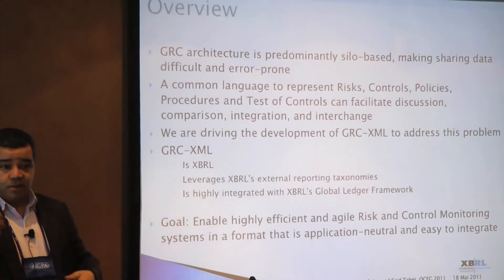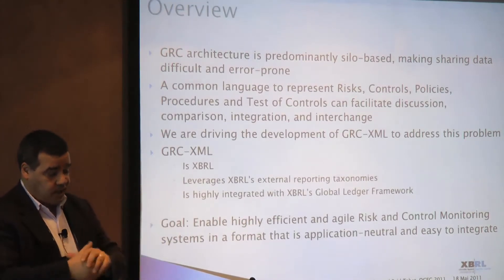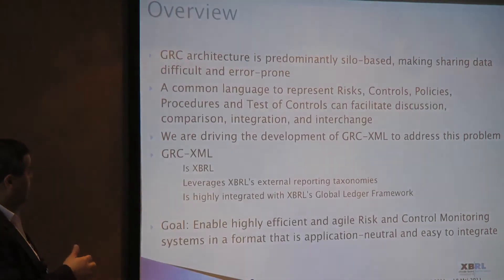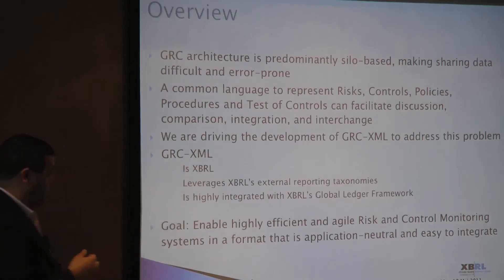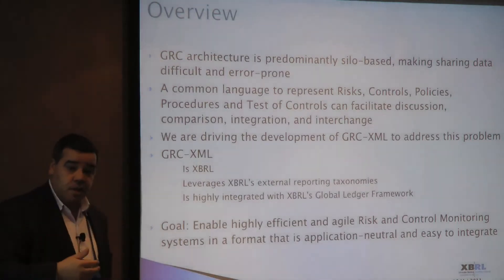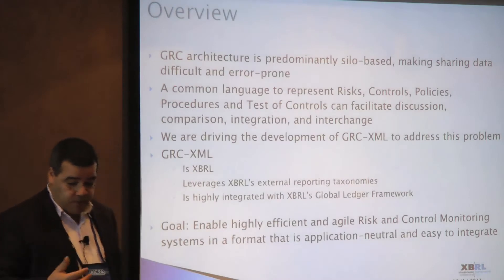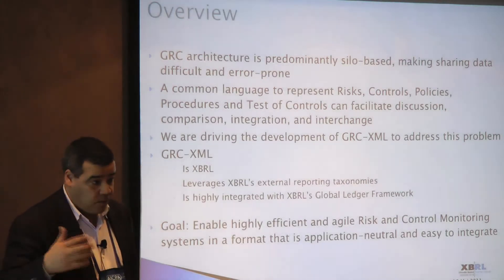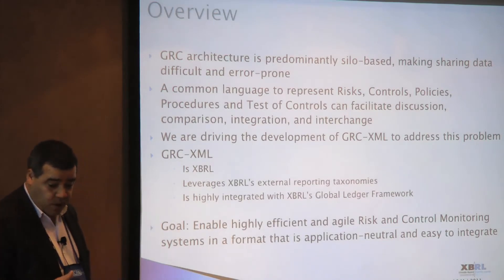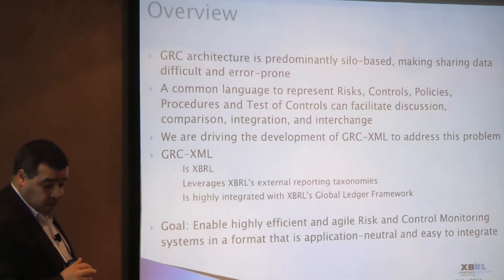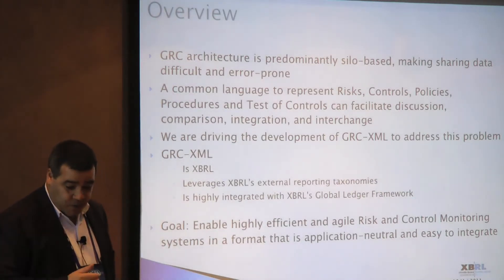Even within a single organization — for example, Siemens with 15 divisions — you can imagine the complexity: risk information is presented differently from IT to business to operational to HR. It gets very hard for the board and management to take action. So why don't we have a common language to represent pieces of information — risks, controls, policies, procedures — and facilitate interchange? That's what GRC XML set out to do by reusing what's available in the market.